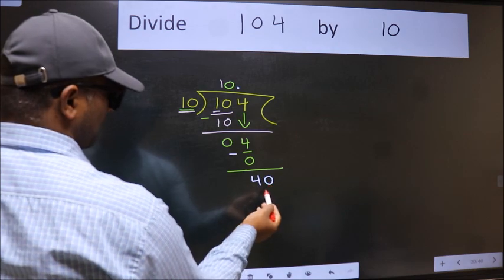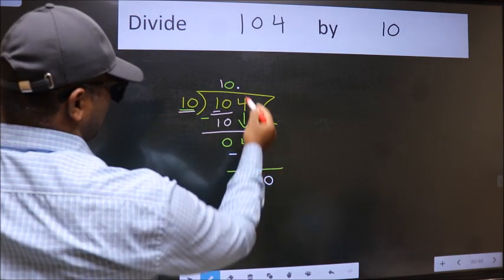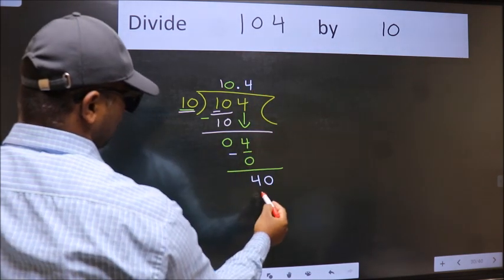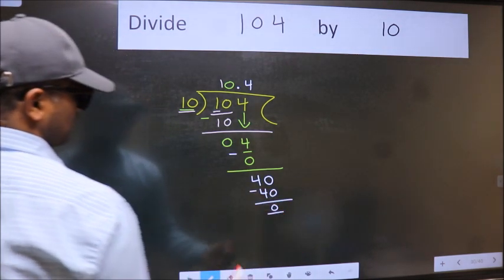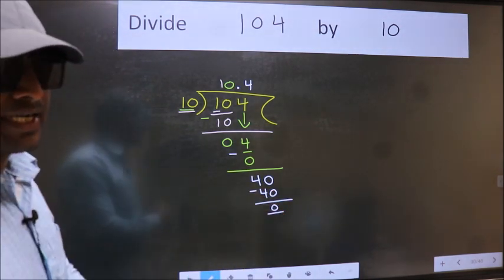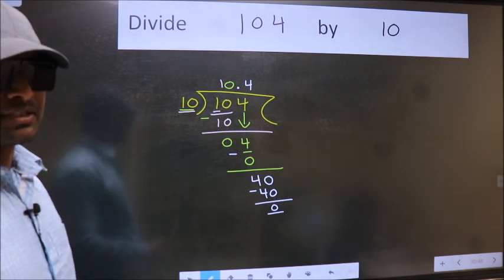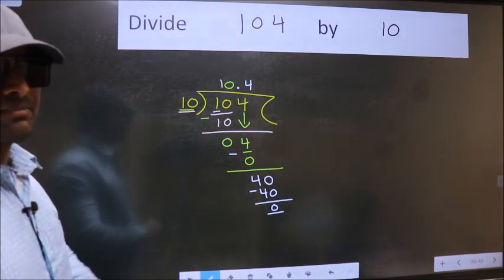When do we get 40 in 10's table? 10 fours is 40. Now, we subtract. We get 0. So, did you understand where the mistake happens? You should not do that mistake.